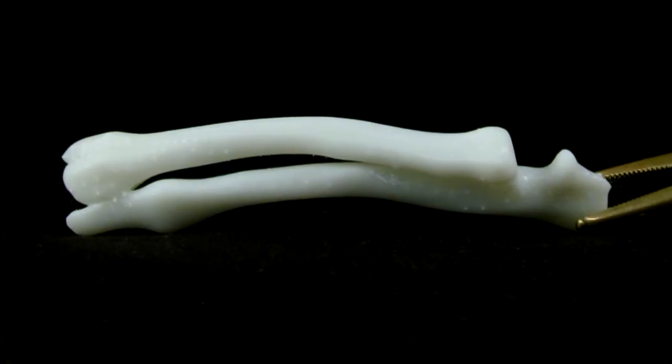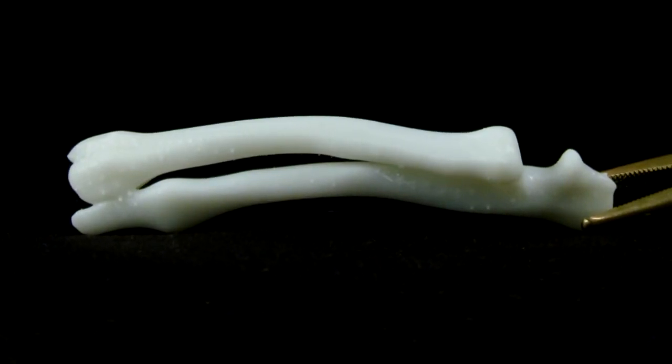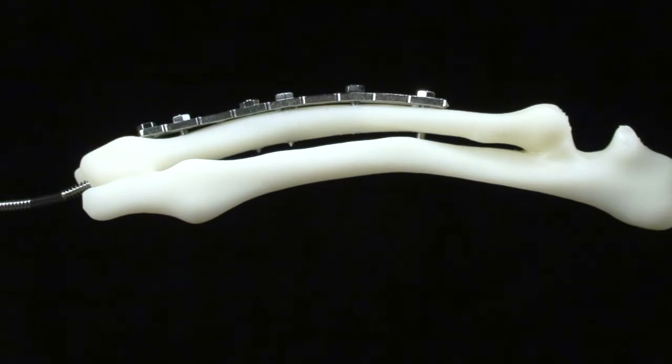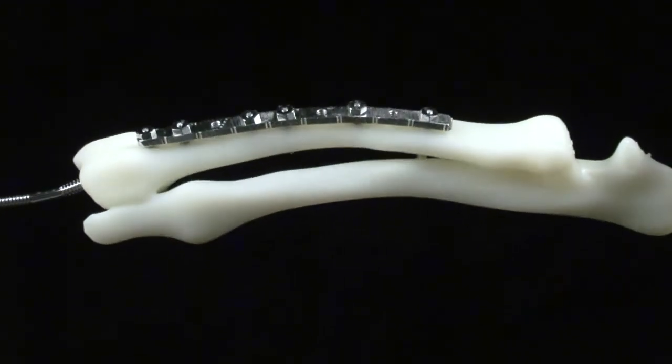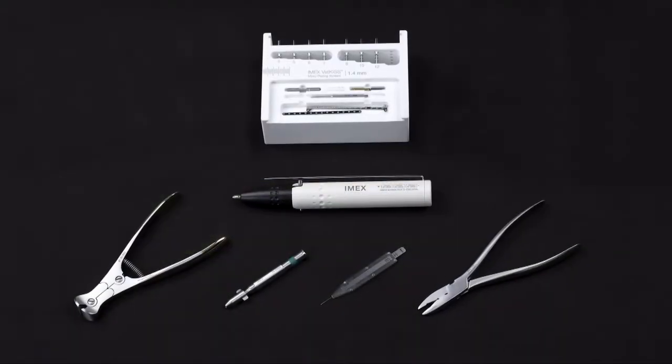This tutorial will demonstrate proper use of the VetKiss instruments and proper implant application to a plastic bone model. This exercise will utilize the 1.4 mm implant set and a pre-contoured 1.4 mm straight plate.